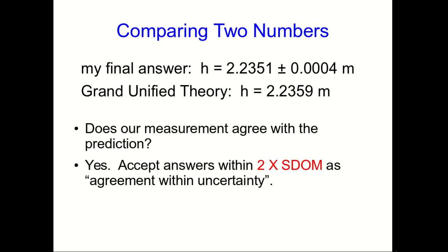That is our general rule. If two numbers are within two SDOMs of each other, then we say they agree within uncertainty.